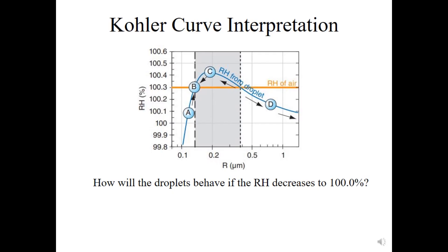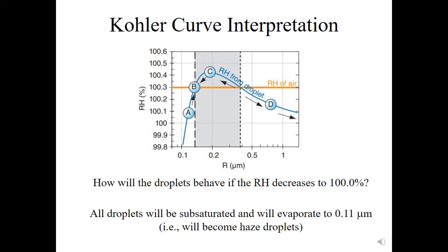And how will the droplets behave if the relative humidity decreases to 100%? All droplets A, B, C, and D require a relative humidity greater than 100% to exist at equilibrium, so they will all have to evaporate. They'll evaporate along the Köhler curve until it intersects the new environmental conditions at 100% relative humidity. Droplets A, B, C, and D will all evaporate down to a size of about 0.11 micrometers, all becoming haze droplets.